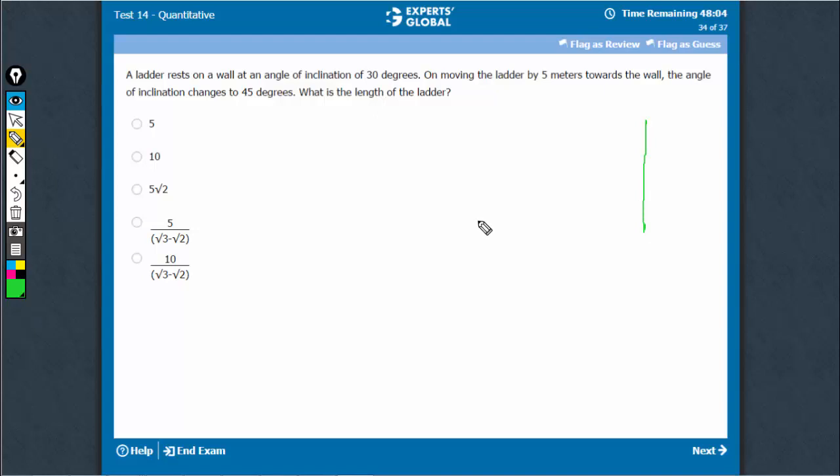There's a wall. The ladder makes an angle of 30 degrees, that's approximately 30 degrees. So, this is a ladder. The length of the ladder is x, and by 30 degrees we know that this is x, this has to be x upon 2, and this has to be root 3 x upon 2.